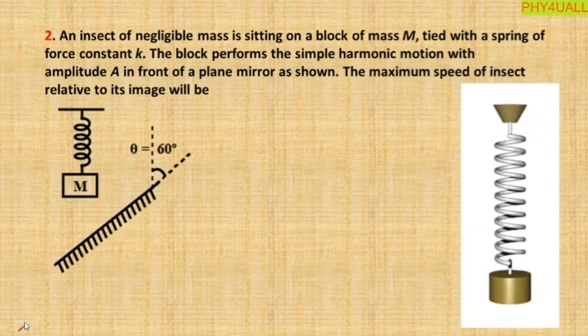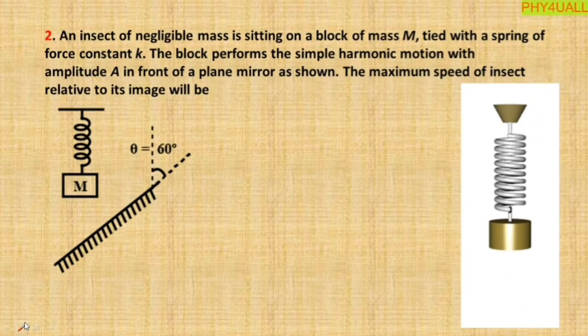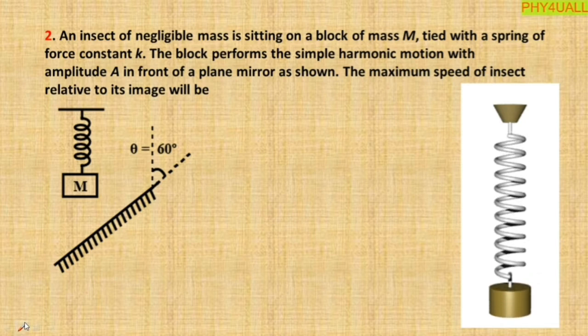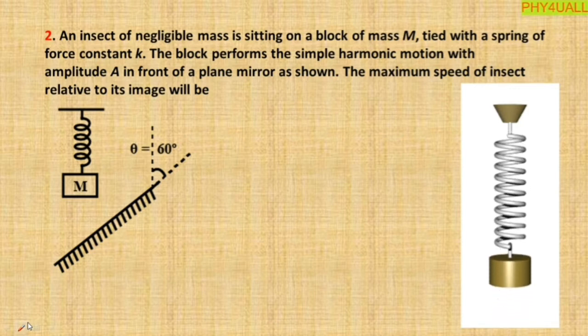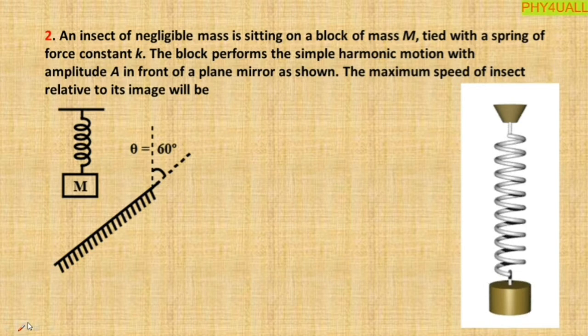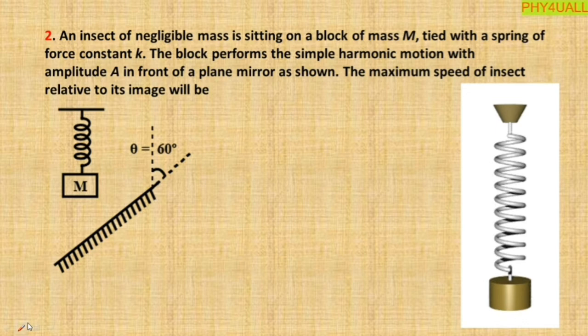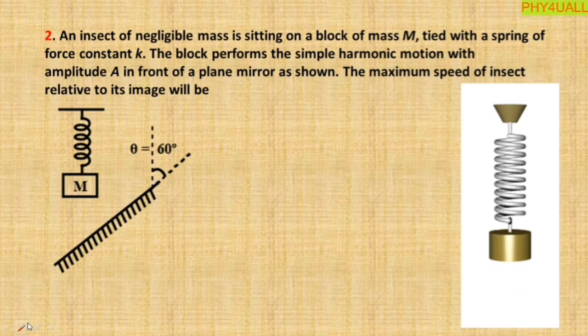Hi everyone, let's discuss today's question. An insect of negligible mass is sitting on a block of mass M tied with a spring of force constant k. The block performs simple harmonic motion with amplitude A in front of a plane mirror as shown in the figure. The maximum speed of insect relative to its image will be...